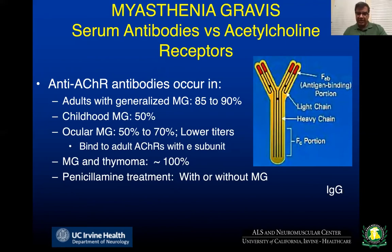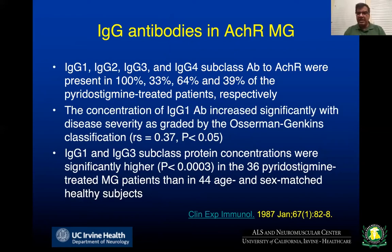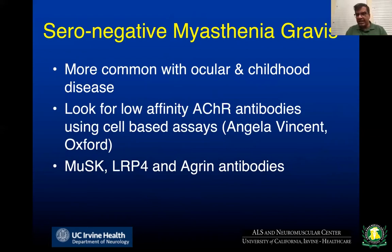These are IgG1 and IgG3 antibodies in myasthenia gravis, which means they are complement-fixing, whereas IgG2 and IgG4 antibodies usually do not fix complement. Antibody concentration and titers vary significantly but also correlate with disease severity. There are cases of seronegative myasthenia gravis where acetylcholine receptor antibodies are absent — much more common with ocular myasthenia gravis and especially in childhood disease. There may be other antibodies present instead, especially antibodies to MuSK.